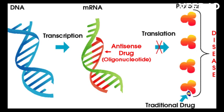One example is the drug Nusinersen, or Spinraza, which is used to treat spinal muscular atrophy, SMA, a genetic disorder that affects muscle strength and movement. The drug is an antisense oligonucleotide that binds to a specific RNA molecule and increases the production of the survival motor neuron, SMN, protein, which is deficient in people with SMA. This drug has been approved in many countries for the treatment of SMA.